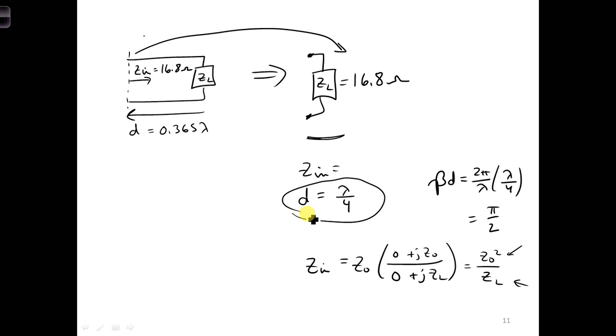Now in our case, we want ZN, we want this to equal 70 ohms. ZO we already have determined is 16.8 ohms. So the only value we can play around with here is Z naught.